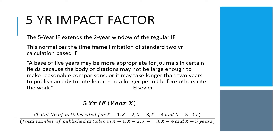For example, to calculate the five-year impact factor for year X: take the total number of articles cited from years X-1, X-2, X-3, X-4, and X-5, divided by the total number of published articles in those same five years. It is simply an extension of the two-year window to a five-year window from the impact factor perspective.